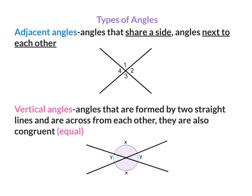Adjacent Angles. These are angles that share a side — they're angles next to each other. Angle 1 and angle 2 are adjacent. Angle 2 and angle 3 are adjacent. Angle 3 and angle 4 are adjacent. Angle 4 and angle 1 are adjacent because they are next to each other.